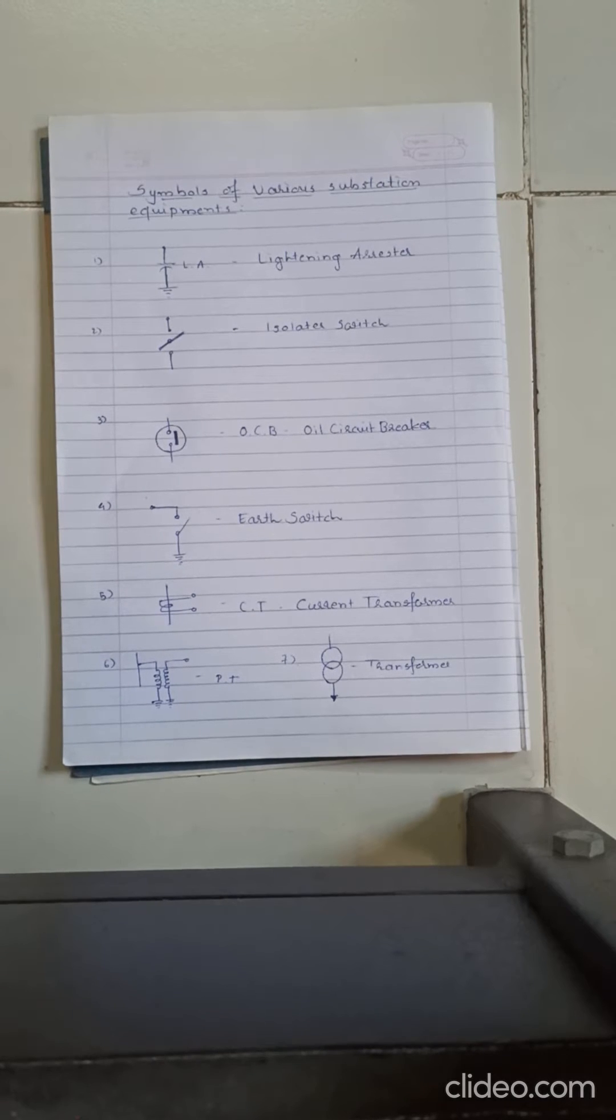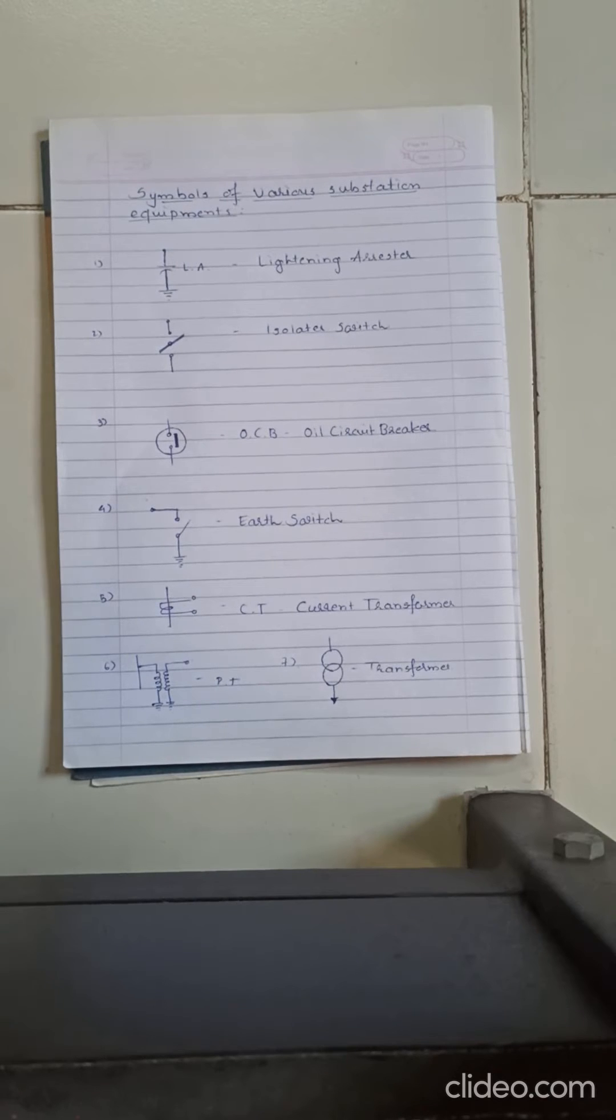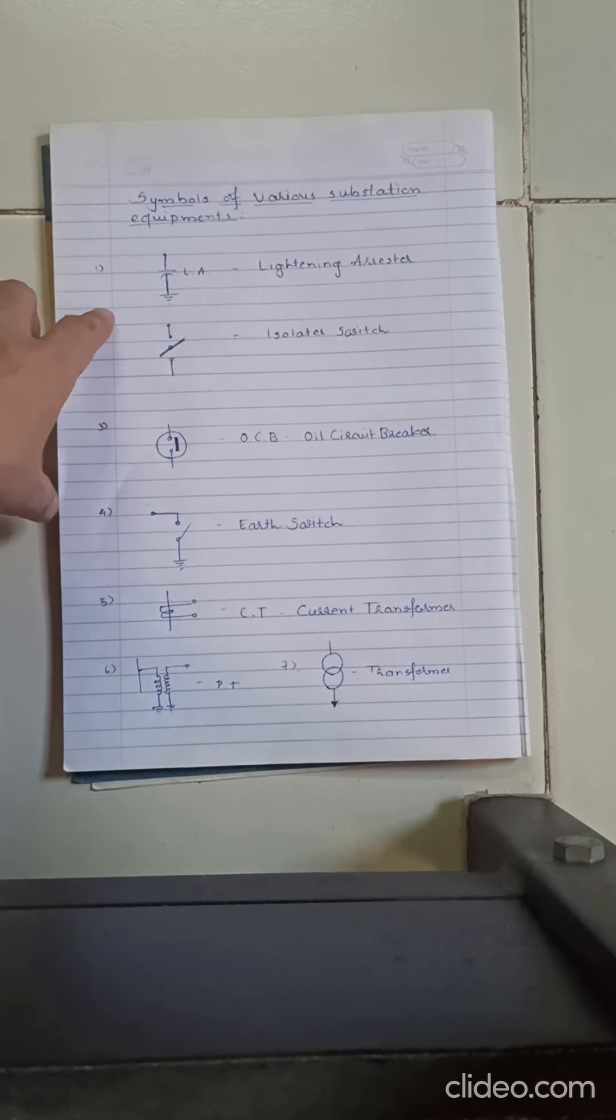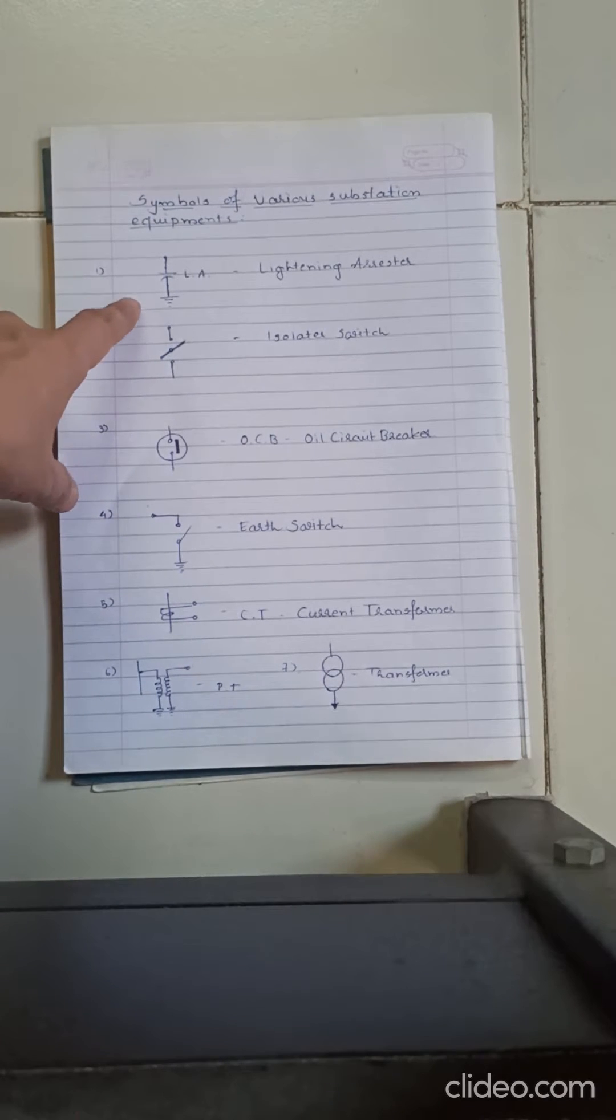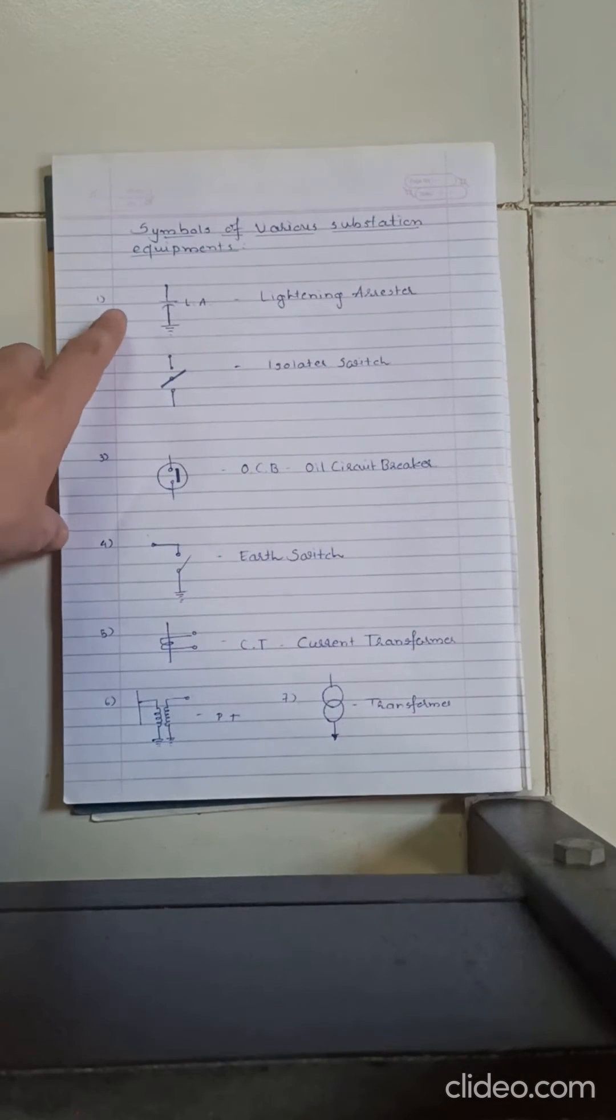So here some of the symbols are listed with their name, so we will go through it very quickly. First, this symbol is called LA, that means lightning arrester. It looks like capacitor, but it's lightning arrester. When it is drawn in one line diagram or in bus bar arrangement diagram, it's referred as lightning arrester and not capacitor.